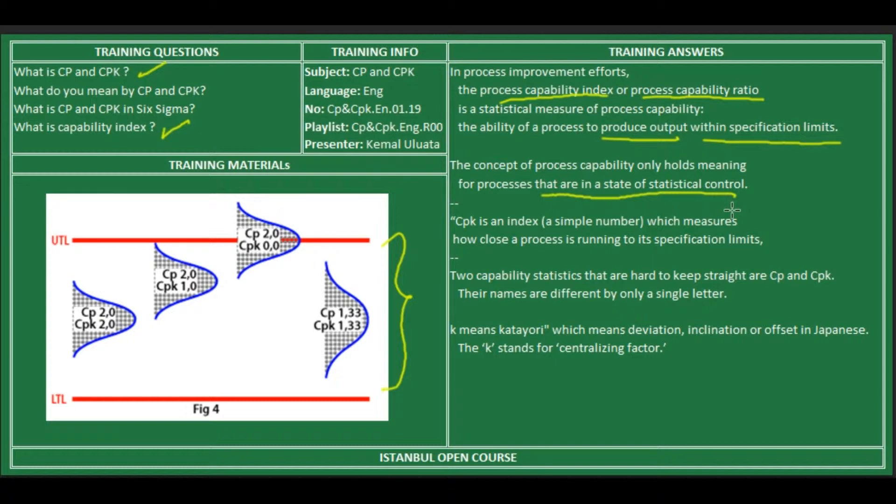For example, if you try to calculate CP and CPK, you first have to install an X-bar and R chart into production, eliminate all the special causes of variation, then you will measure CP and CPK indices.